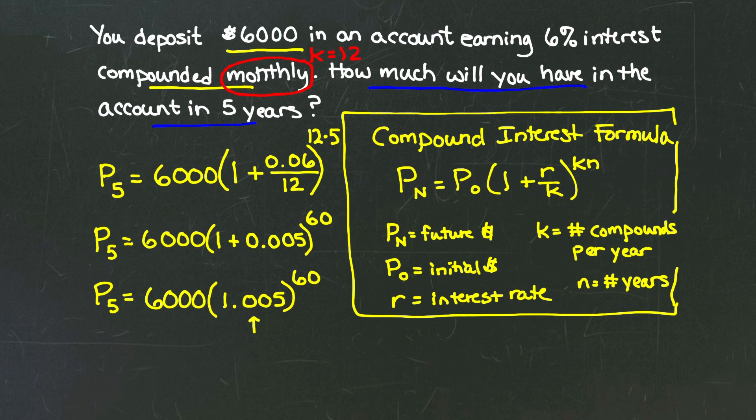1.005 raised to the 60th gives me about 1.34885, approximately. I'm going to then multiply that number times 6,000, and that's going to give me my final result. I get that the principal after five years is $8,093 and this decimal is 0.100915.